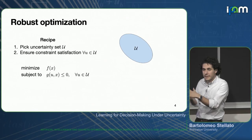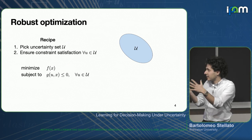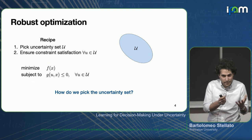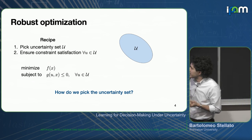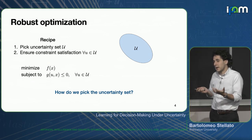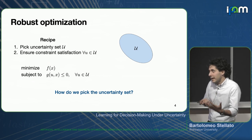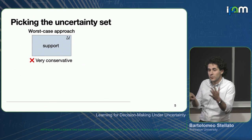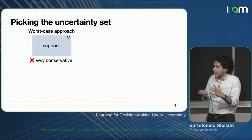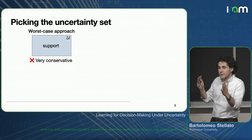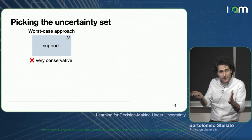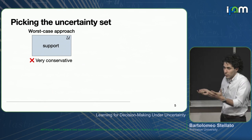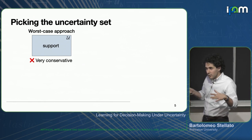The uncertain parameter x can be integer — this is more generic than just continuous. However, it's not always clear in many applications how to pick the uncertainty sets, and the whole point behind robust optimization is choosing this uncertainty set in a smart way so that we are not too conservative but we still guarantee constraint satisfaction. One very common way is to look at the support of the uncertainty — the worst-case approach — for example, taking the maximum and minimum value that demand can take in an inventory management problem. This is very conservative but it works.